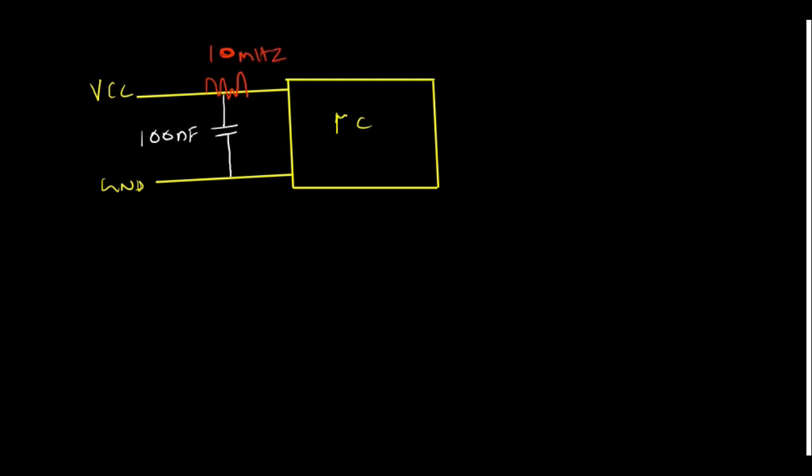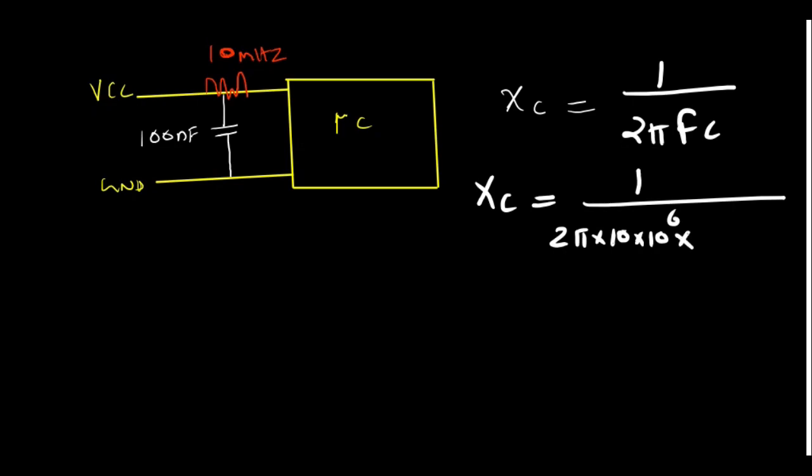Now what is the resistance offered by this capacitor for this noise or the transient? We can calculate as Xc equal to 1 upon 2πfc. Now if you calculate what is Xc, that is 1 upon 2π multiplied by frequency 10 megahertz, 10 multiplied by 10 to the power 6, multiplied by what is the capacitance, 100 nanofarad, 10 to the power minus 9. So this gets cancelled. So you get Xc equal to 1 upon 2π, which almost comes to 0.1 ohm.